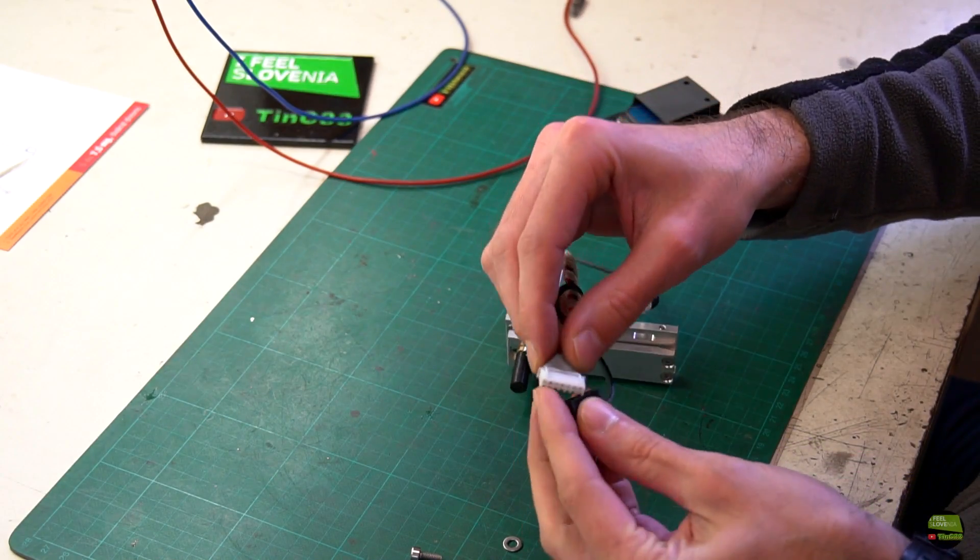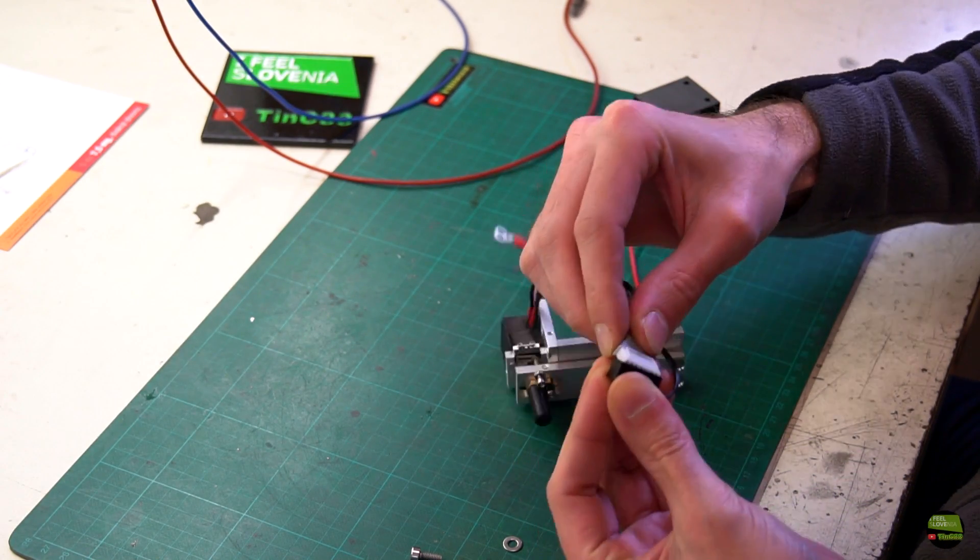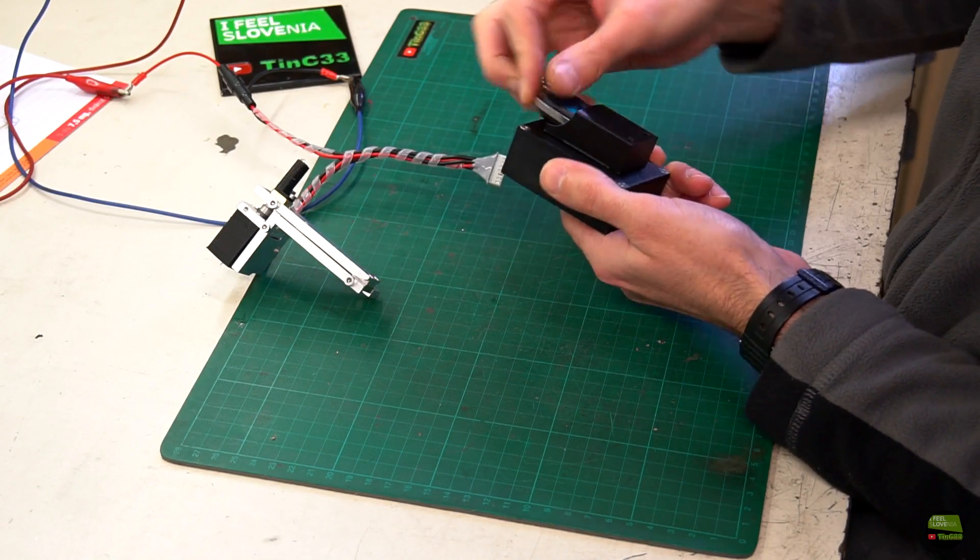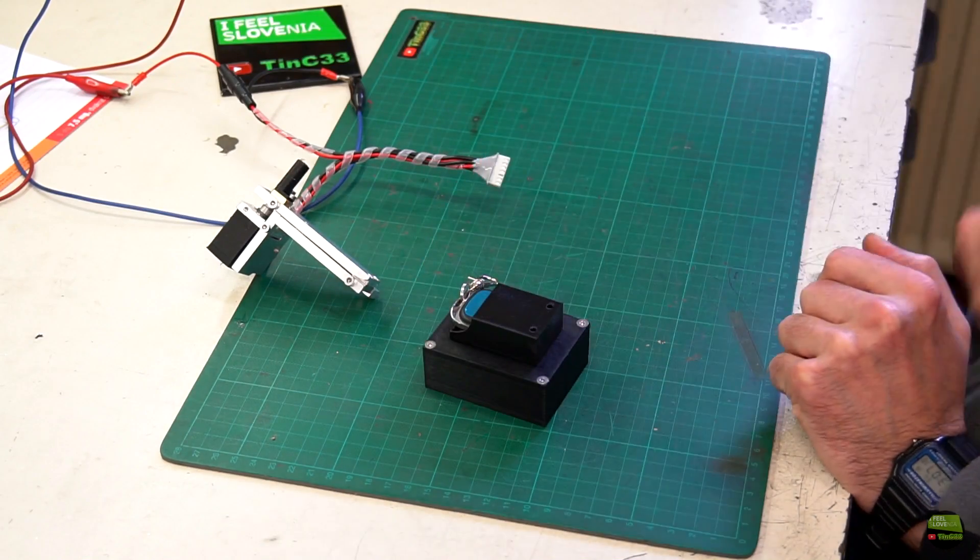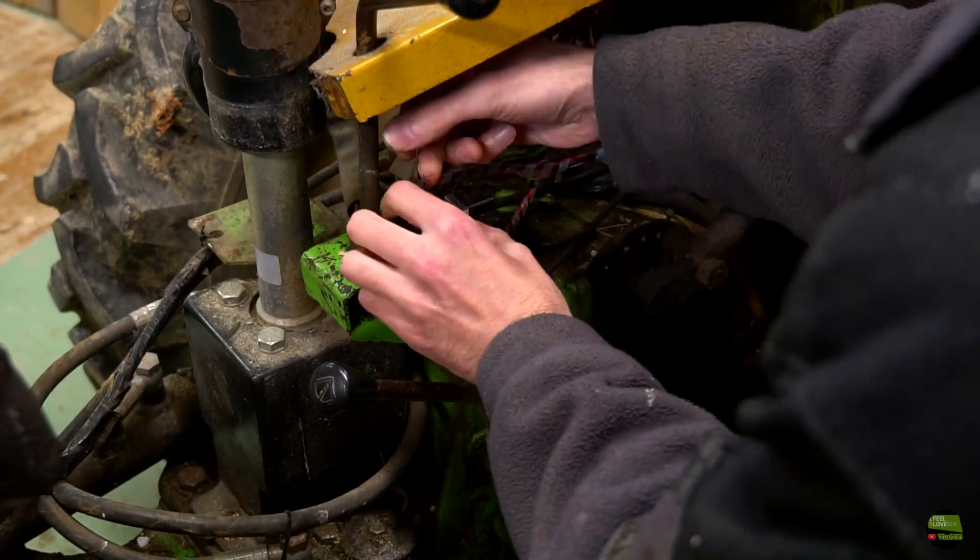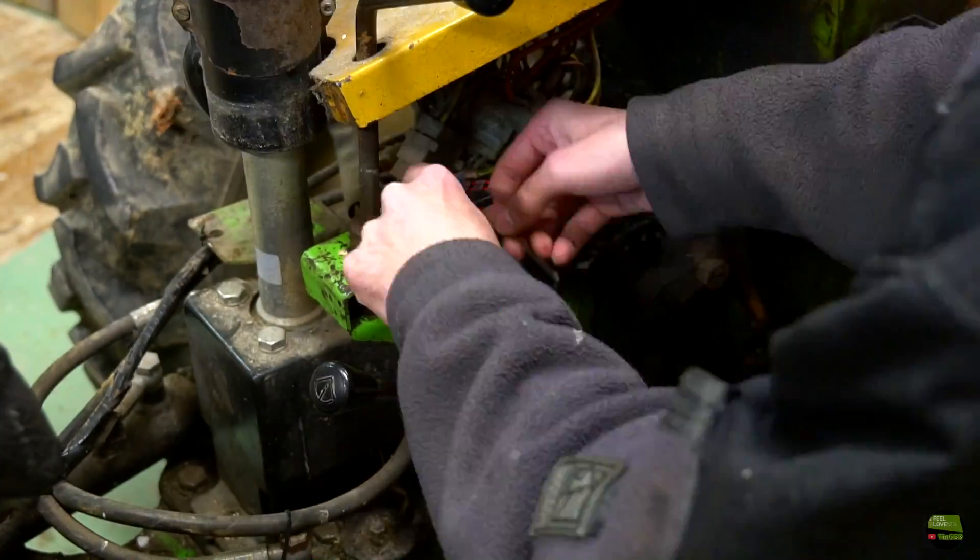After use, simply unplug the electronic box and protect the connector from the motor unit. On the box I made an additional holder for the remote controller so it's always in its place. All I need to do now is mount the unit on the tractor and make a test.